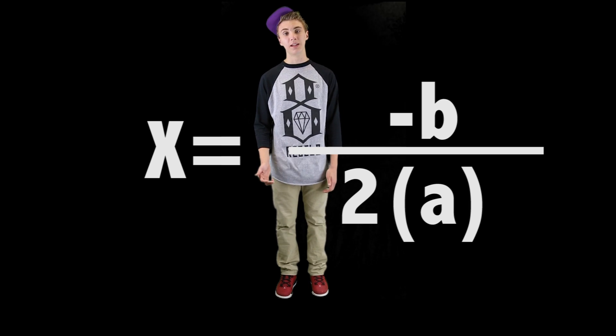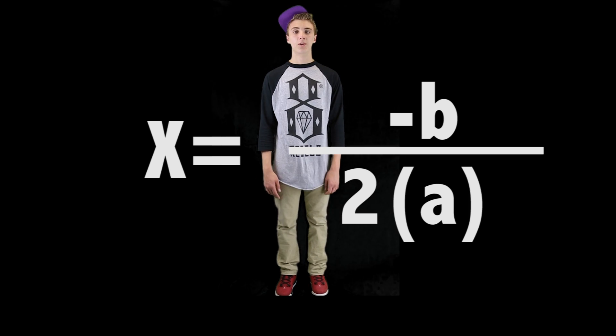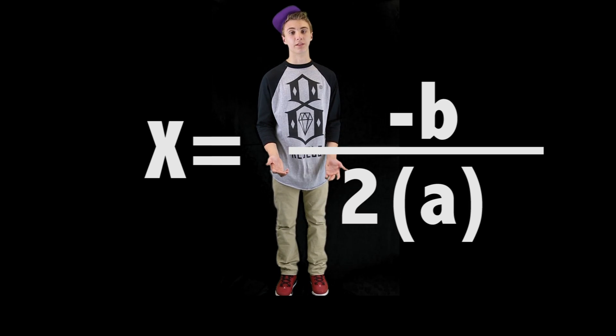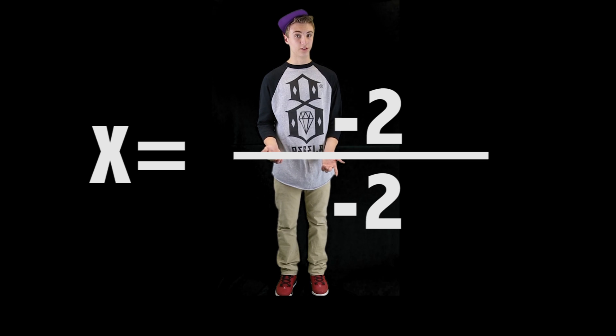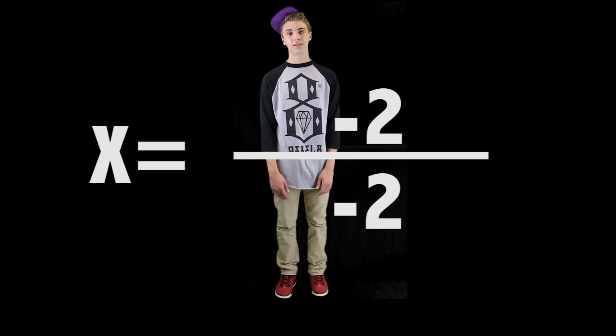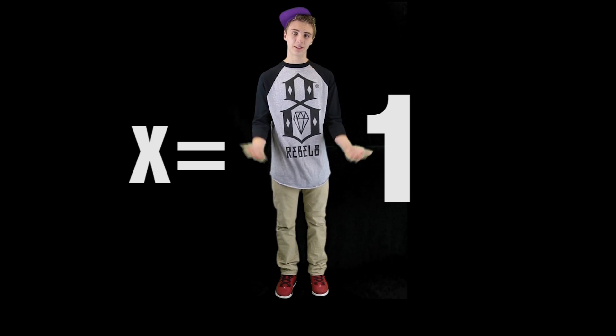Next, we have to find the line of symmetry. To do this, we'll use the formula x equals negative b over 2a. When we substitute the values into the equation, we get negative 2 over negative 2, which of course equals 1.